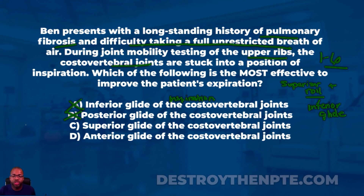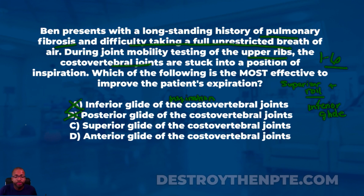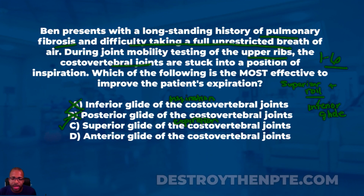Answer C says superior glide of the costovertebral joints. If I do a superior glide of that joint, the roll is going to do the opposite — an inferior roll. Does a superior glide help with inspiration or expiration? It helps with expiration, 100%. I'm putting a big check mark next to this answer because that's exactly what the question is asking for — which is most effective to improve the patient's expiration. Superior glide all day long.